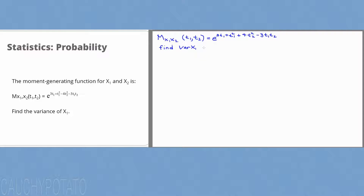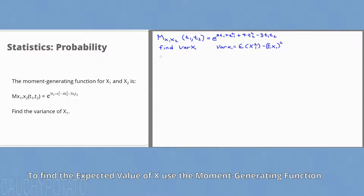We want the variance of x1. The variance formula is: variance of x1 equals the expected value of x1 squared minus the expected value of x1, all squared. Since t1 corresponds to x1, we use the marginal moment generating function for x1 only: mx1(t1) equals e to the 3t1 plus t1 squared, obtained by letting t2 equal 0.